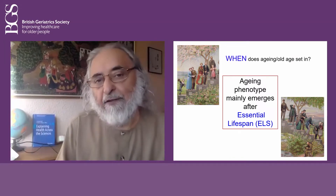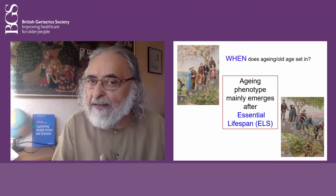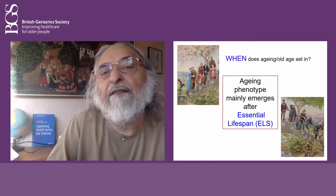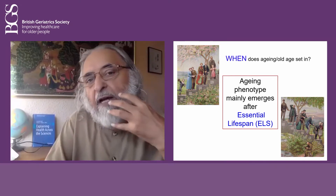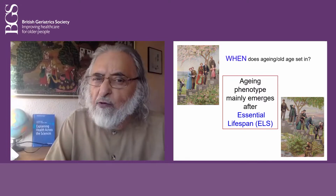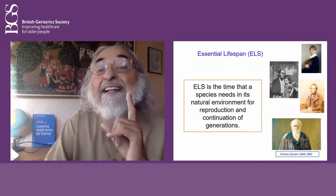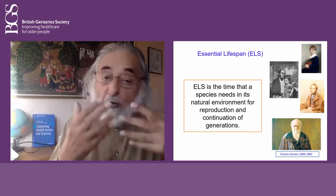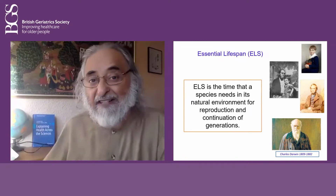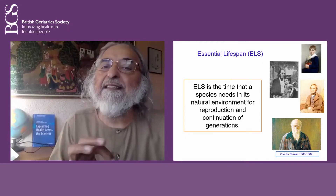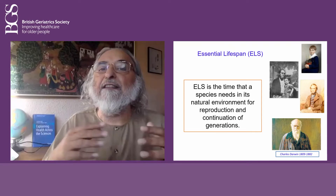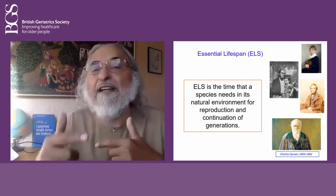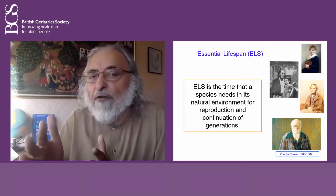This may be a new term for you — essential lifespan — because we know what average lifespan and maximum lifespan are, but what is essential lifespan? According to Darwinian theory of evolution, essential lifespan is the time that a species needs — like homo sapiens, drosophila melanogaster, or rattus rattus — in nature, not in protected conditions, to fulfill the purpose of life in biology, which is continuation of generations, giving rise to the next generation.